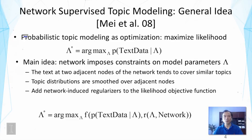The main idea of incorporating network is to think about the constraints that can be imposed based on the network. In general, the idea is to use the network to impose constraints on the model parameters lambda. For example, the text at adjacent nodes of the network can be assumed to cover similar topics. Indeed, in many cases, they tend to cover similar topics. We may be able to smooth the topic distributions on the graph so that adjacent nodes will have very similar topic distributions. They will share a common distribution over topics or have just slight variations of the topic distributions or topic coverage.